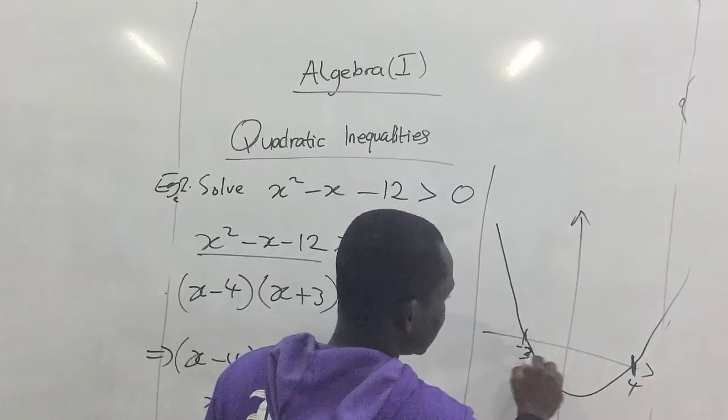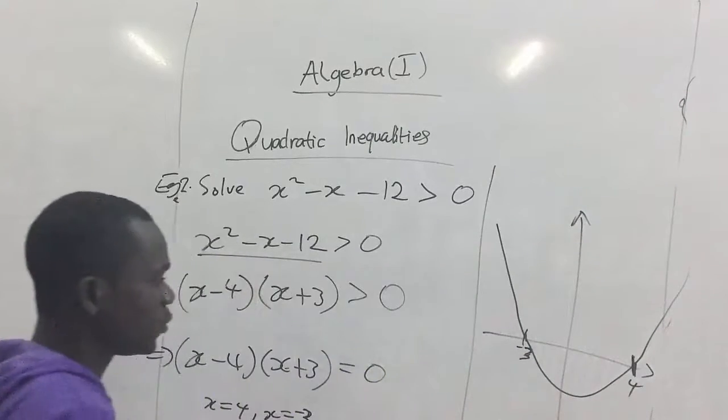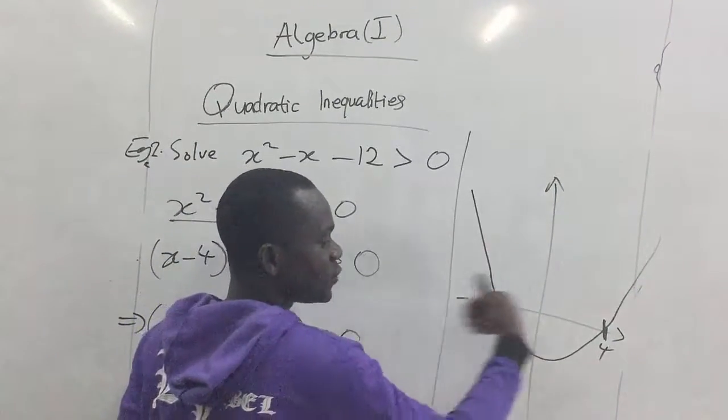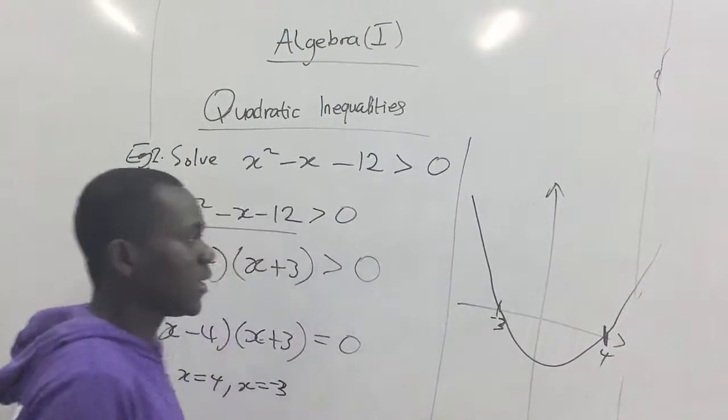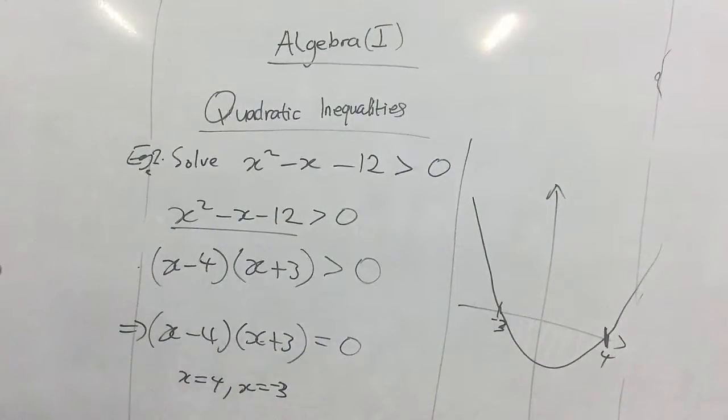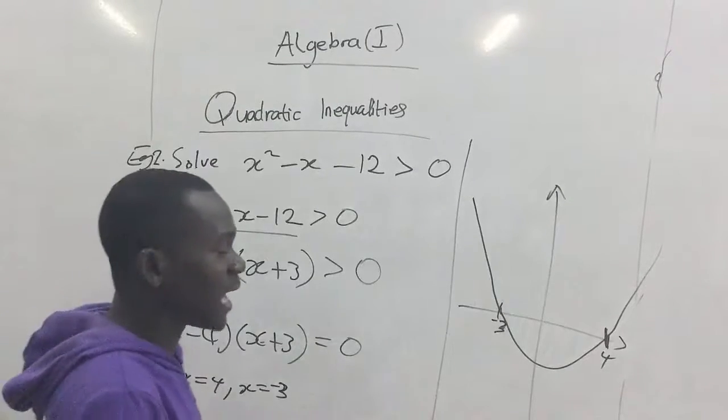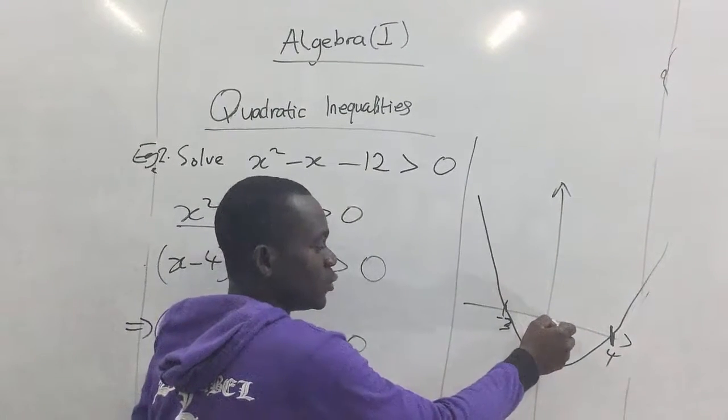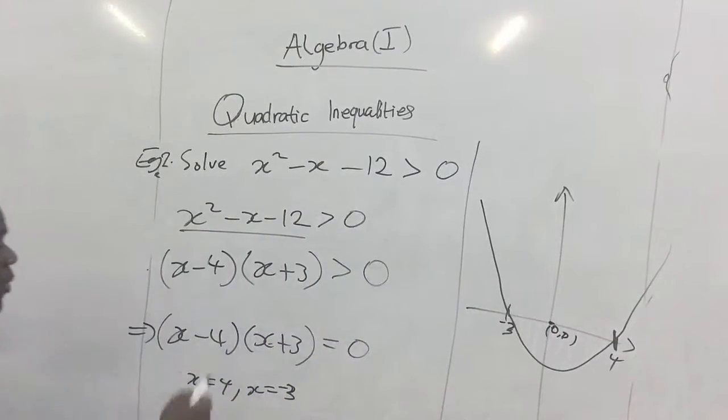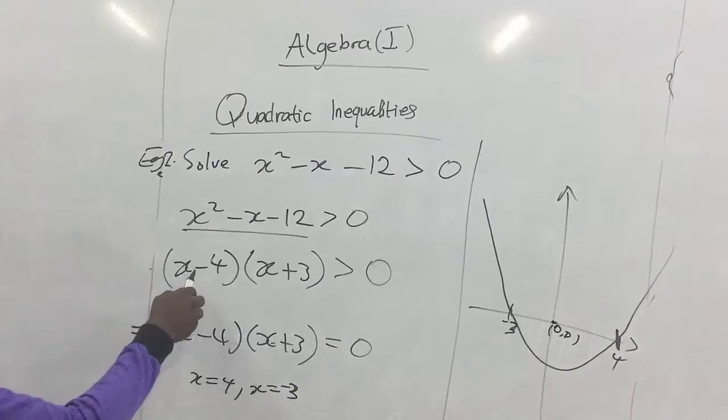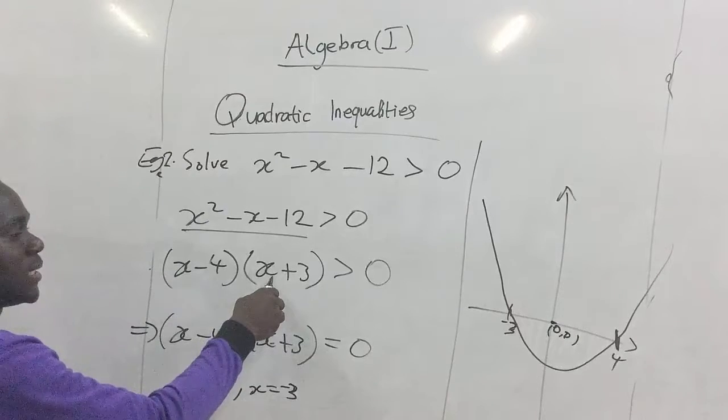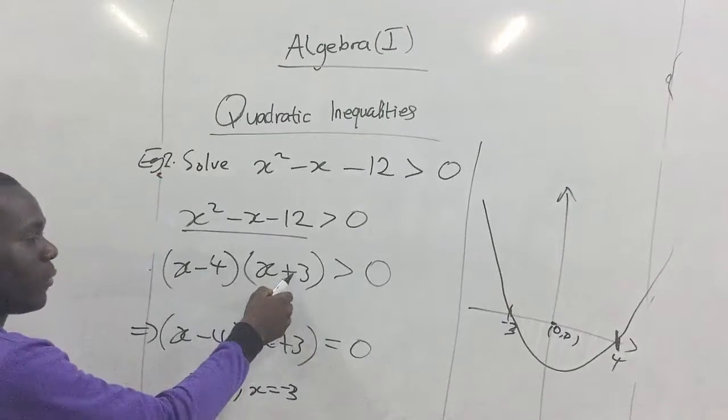Okay, at negative three. So now we pick either values left or right or within the graph. The one that satisfies the inequality expression here becomes our solution set and it's always kind of easier using the origin. So here x is zero at the origin, so you pick it or you place zero here you are going to get negative four.